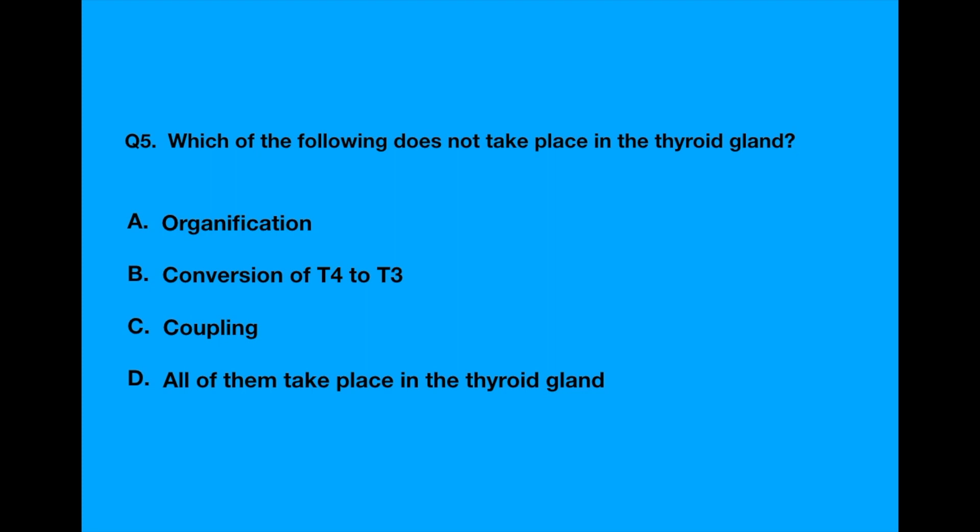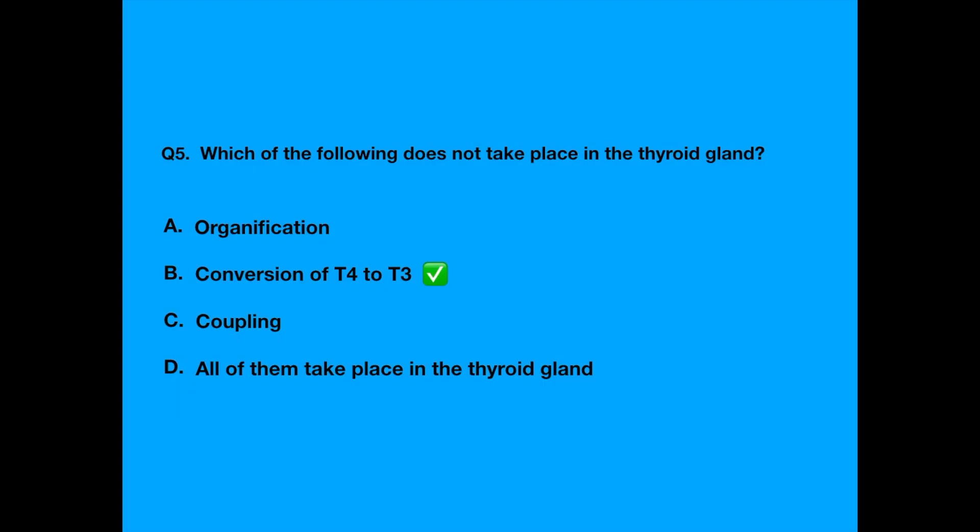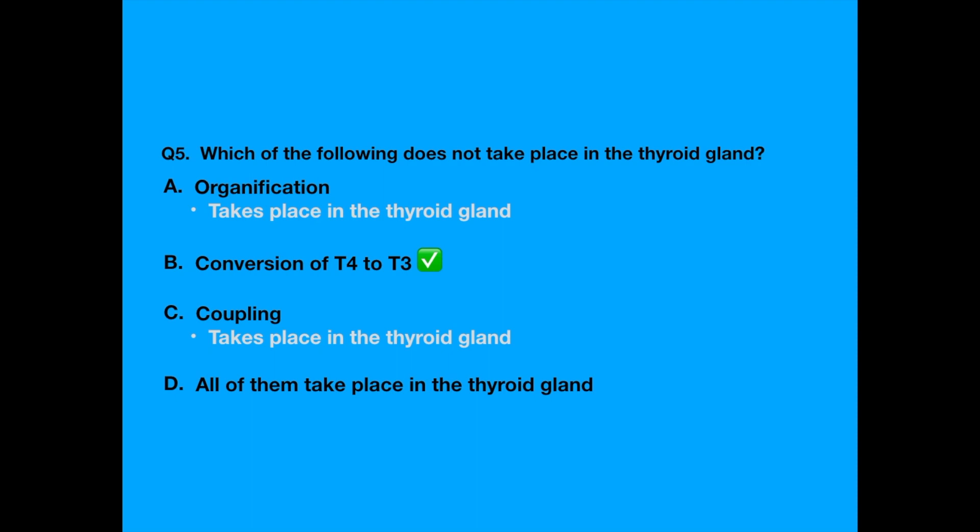The answer to this question is conversion of T4 to T3. There are three steps in thyroid hormone synthesis: oxidation, organification and coupling. I have mentioned them in detail in my previous video on how to understand the thyroid gland and Graves disease. All these steps take place in the thyroid gland. The conversion of T4 to T3 takes place in the peripheral tissues by the enzyme deiodinase.